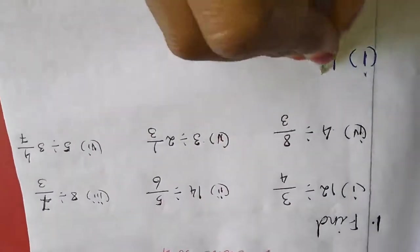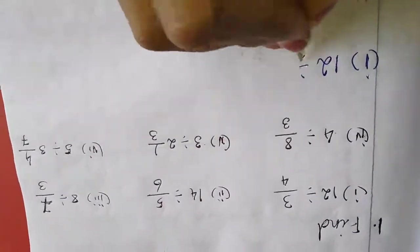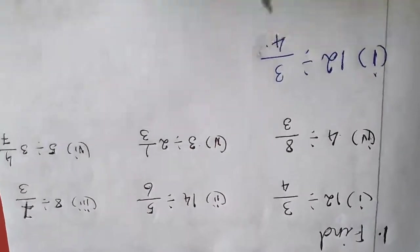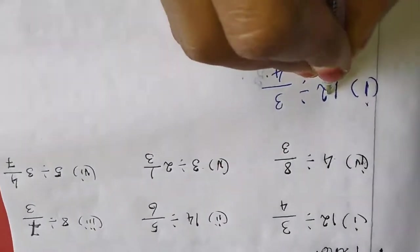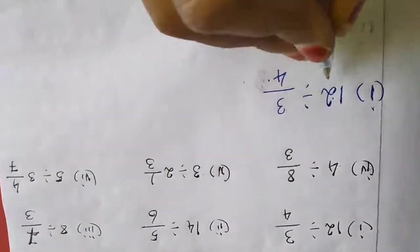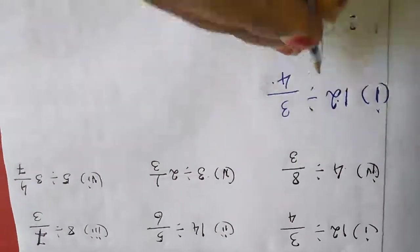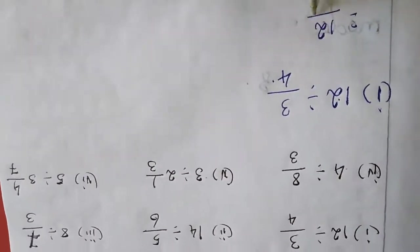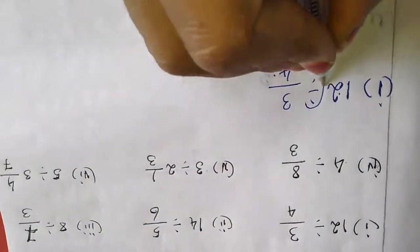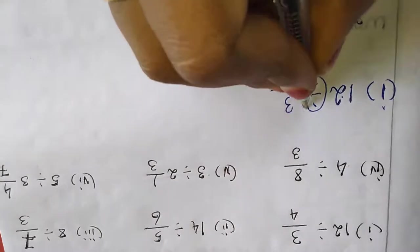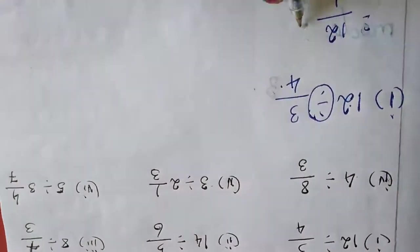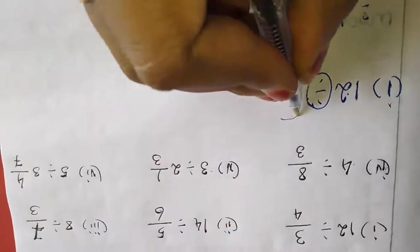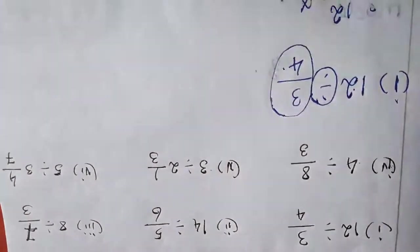The first sum is 12 divided by 3/4. The procedure is: first, you have to change this whole number as a fraction, that is 12/1. Next, you have to change the divide symbol to multiplication and change this fraction to its reciprocal.